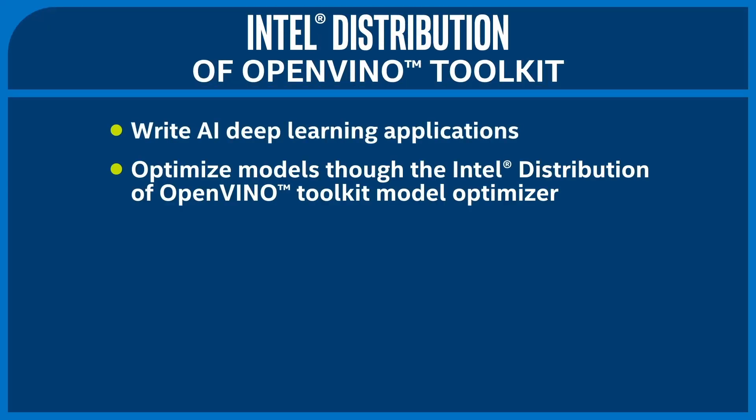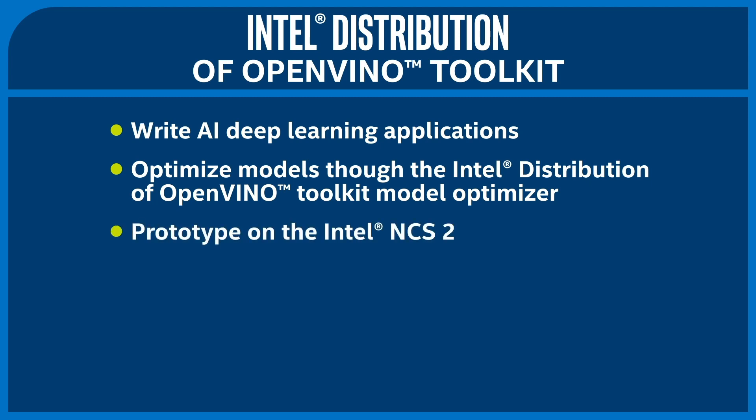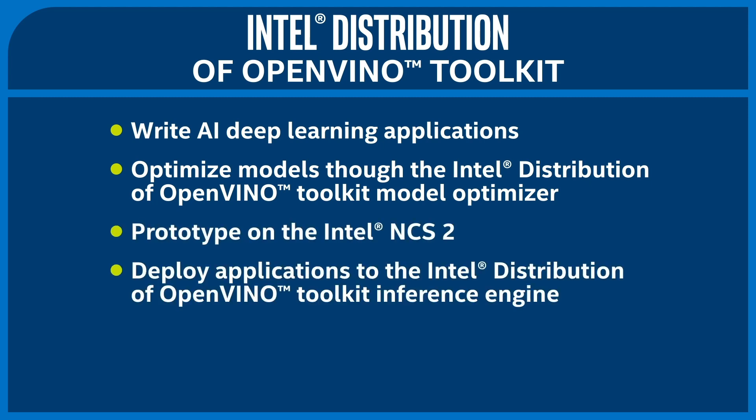You can write your AI deep learning application, optimize the model through the OpenVINO Model Optimizer, prototype on the Intel NCS2, and deploy the application to the OpenVINO inference engine on any of the four architectures.